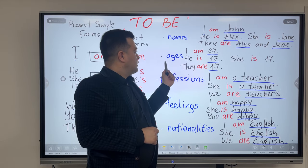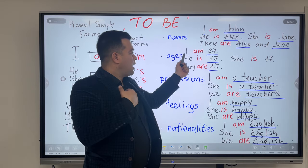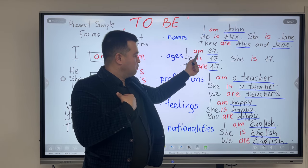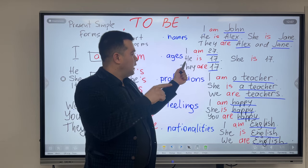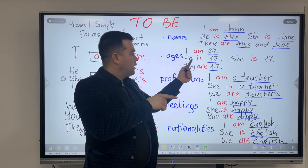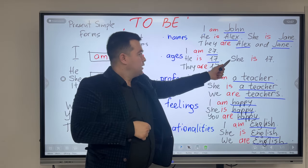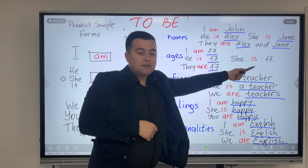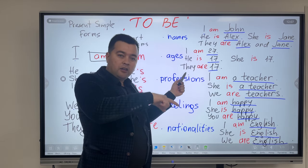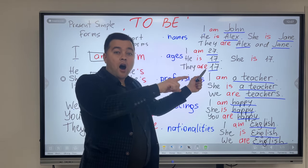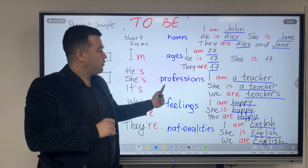Let's speak about age. I am 27. He is 17. She is 17. They are 17.